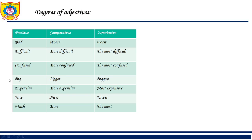'My watch is expensive' — 'My watch is more expensive than yours' — 'My watch is the most expensive watch in our family.' Similarly: nice, nicer, nicest. You can use these words: much, more, most.